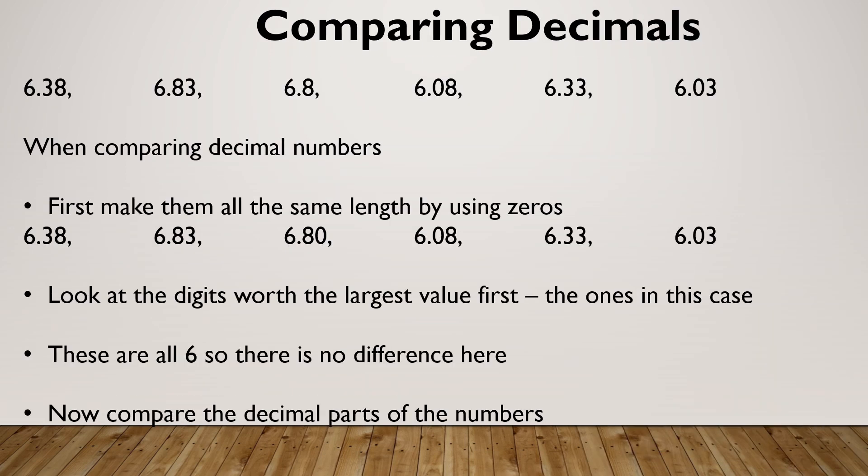If you're asked to compare decimals, the first thing I would say is make them all the same length by using zeros. I'm going to use my 6.8 as an example. That 6.8 is six ones or six units and eight tenths. 6.8 and 6.80 are exactly the same number. Six ones, eight tenths, no hundredths. So all I'm saying is there's a lack of number in my hundredths column. Then we look at the digits with the largest value. In this case, that's the units. They're all a six. So there's no difference here. Then we'll compare the decimals.